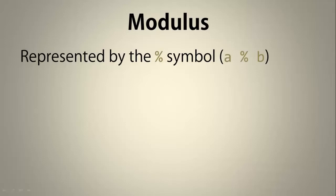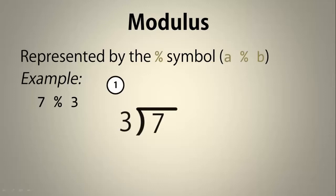So let's look at an example. Calculate 7 modulo 3. One way to think of it is like long division. And when you finish this problem, you find that the remainder is 1, and so the answer is 1.